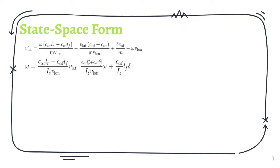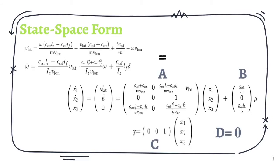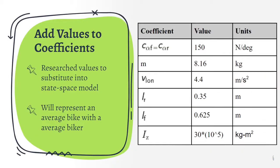However, we need to convert this into state-space form. This is the state-space representation with the ABCD matrices labeled. Finally, we can test for the characteristics that will later allow us to design a controller. Before doing the analysis, we need to add values to our coefficients.